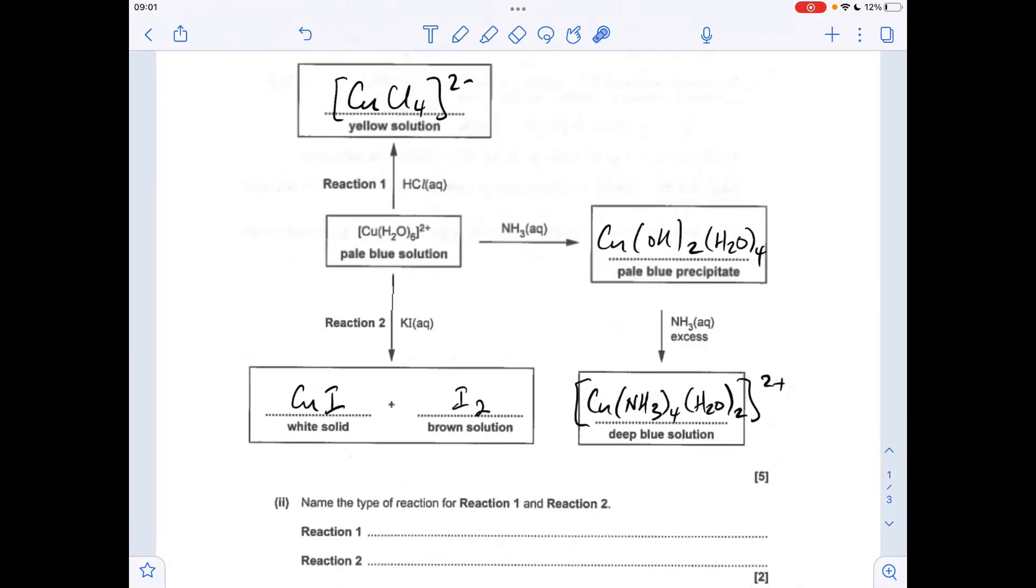Moving on to the two reaction types. Reaction one is ligand substitution - the H2O ligands have been replaced by chloride ligands. Reaction 2 is a redox reaction. I've written some oxidation numbers, so the copper has been reduced from +2 to +1, whereas the iodine has been oxidized from -1 up to 0.